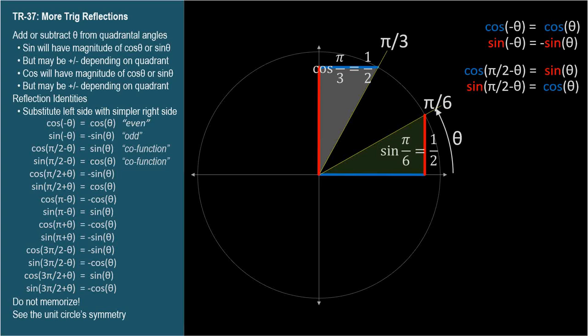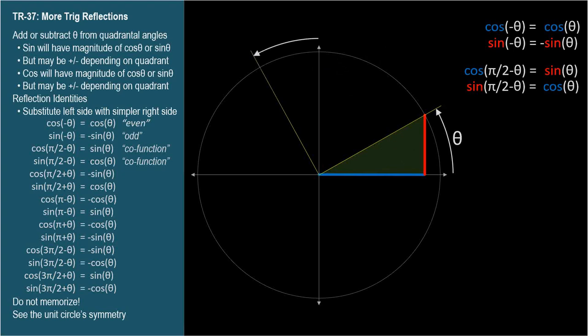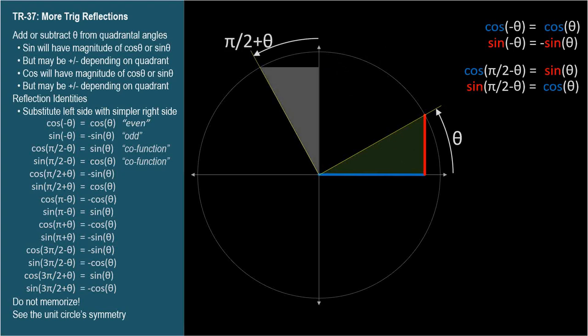In that video, I explain how the three co-functions — cosine, cotangent, and cosecant — got their names. Now let's put the triangle on the other side of the y-axis by taking pi over 2 and adding theta. Here's the cosine and sine of pi over 2 plus theta. What are their lengths in terms of cosine theta and sine theta?